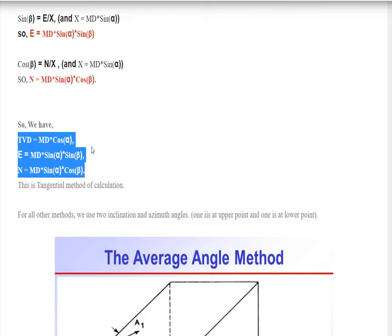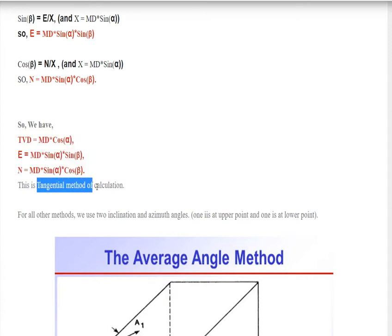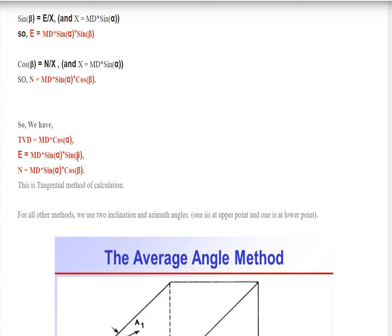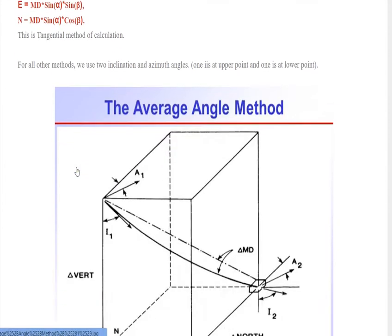These are the three equations derived from the diagram. This is called the tangential method of calculation, where we use only one value of alpha and one value of beta — beta is the azimuth and alpha is the inclination angle.